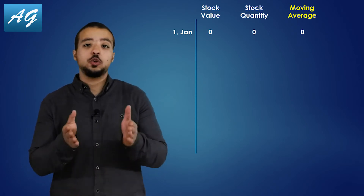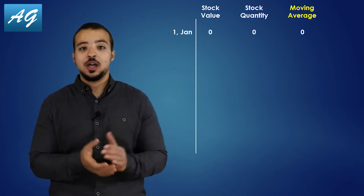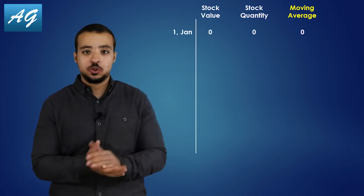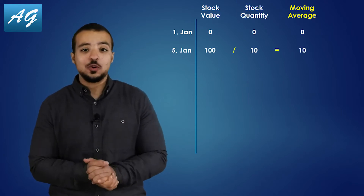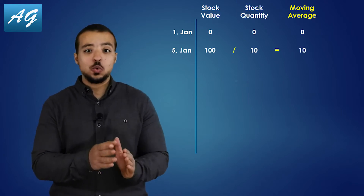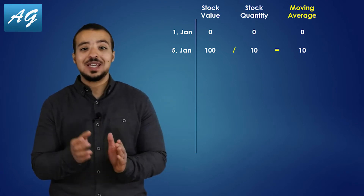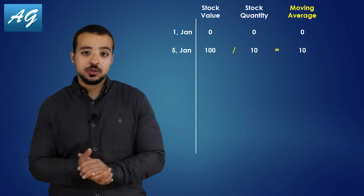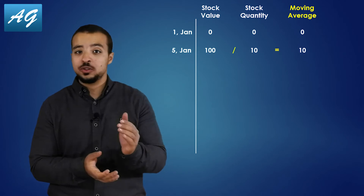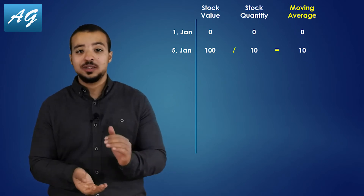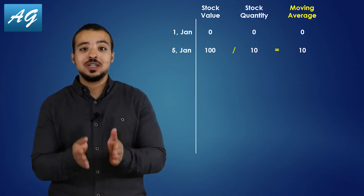Today, we are going to buy 10 chairs and the price is 10 USD per chair. So the total stock value is going to change to 100 USD and the total stock quantity is 10 chairs. The moving average cost equals 100 divided by 10, which is 10 USD per chair.